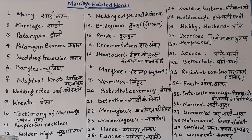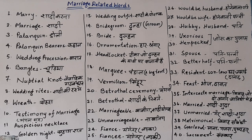The thirty-third word is 'resident son-in-law' — a ghar jamai (son-in-law who lives with the wife's family) is called 'resident son-in-law.' The thirty-fourth word is 'feast' — 'bhoj ya dawat' is called 'feast.' Note: do not say 'fist' — f-i-s-t means 'mutthi' or 'mukka.' The correct pronunciation is 'feast' with a long vowel. 'Sumptuous feast' means a grand or expensive feast — s-u-m-p-t-u-o-u-s.